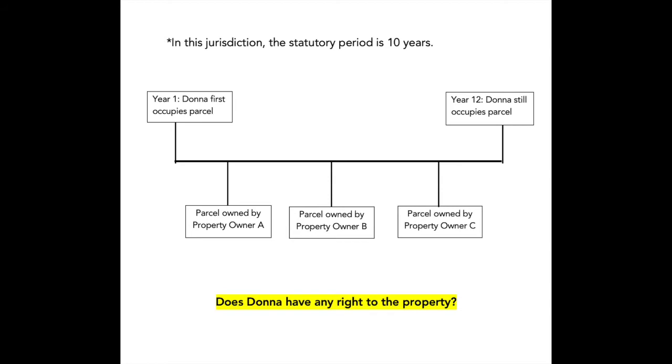The same is true for true owners. So let's say Donna adversely possessed a parcel for 12 years, and the statutory period in that jurisdiction is 10 years, yet the property changed ownership three times during that period. The court will look to the way that the property changed ownership, and they will say that from one seller to the next, as long as there was a contract between them or some relationship that gave the subsequent seller rights to the prior seller, going all the way back to when Donna started adversely possessing the property 12 years ago, that is enough to show that Donna can force the current true owner to tack on to the sloth of the prior true owners.